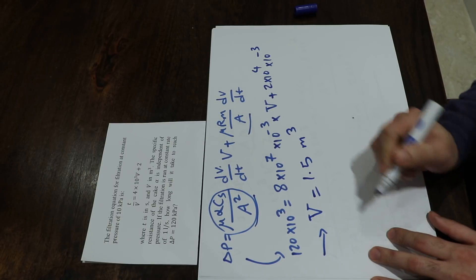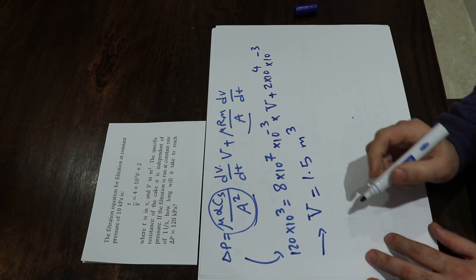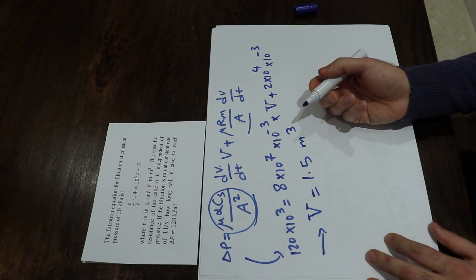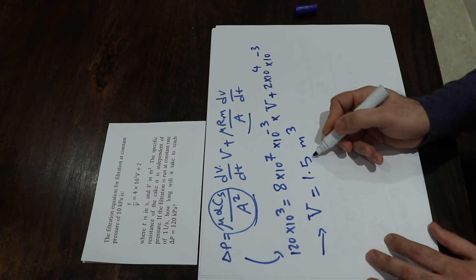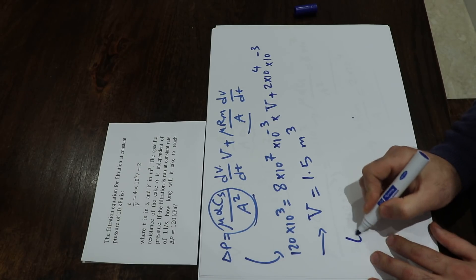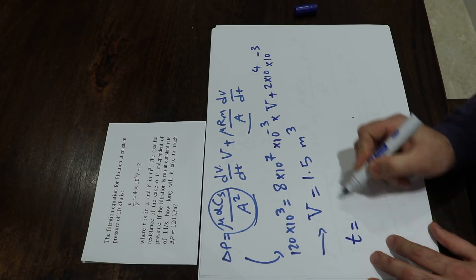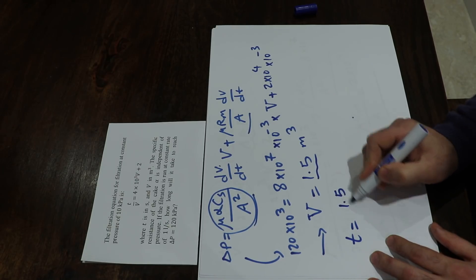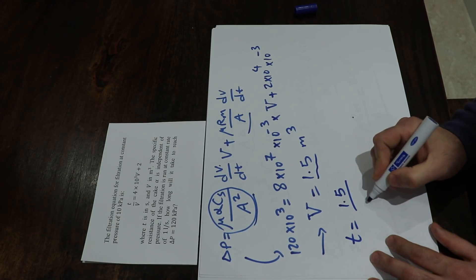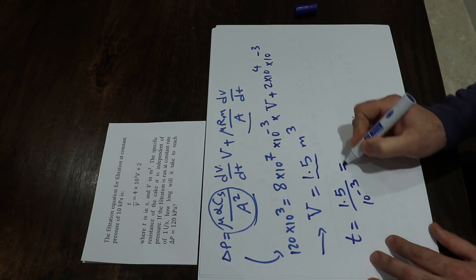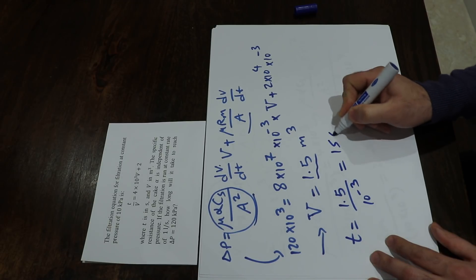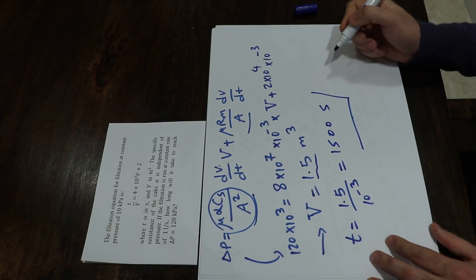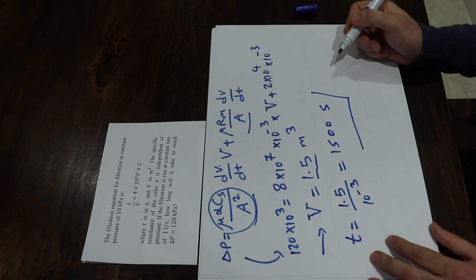Since the filtration rate is constant at 10 to the minus 3 cubic meters per second, the time required to collect 1.5 cubic meters is: t equals 1.5 divided by 10 to the minus 3, which equals 1500 seconds. That is the solution to this question.